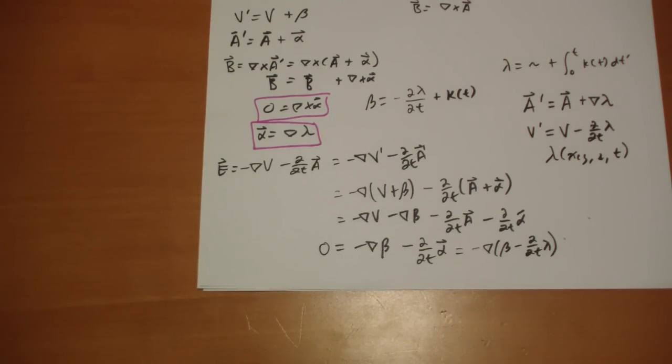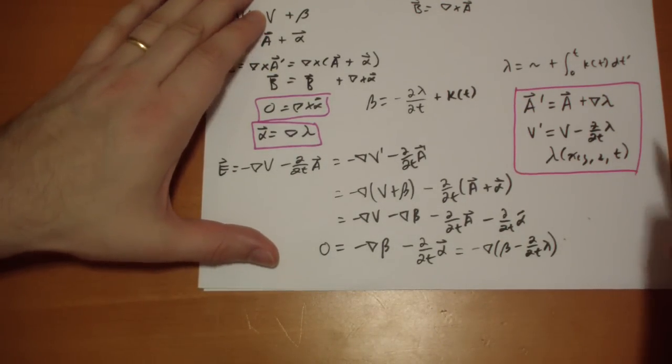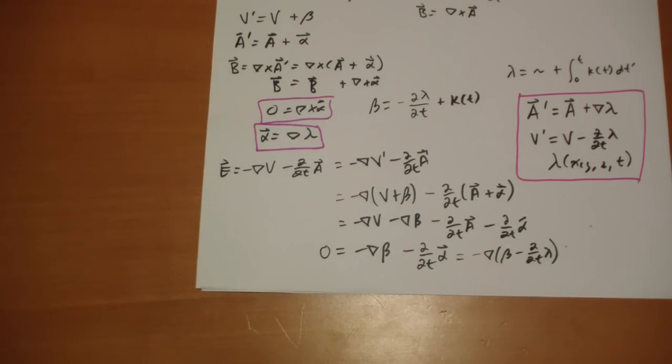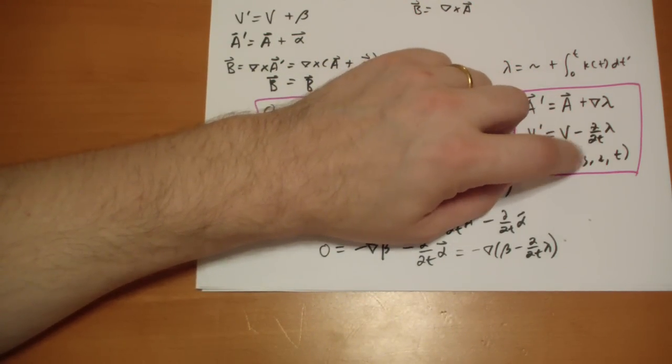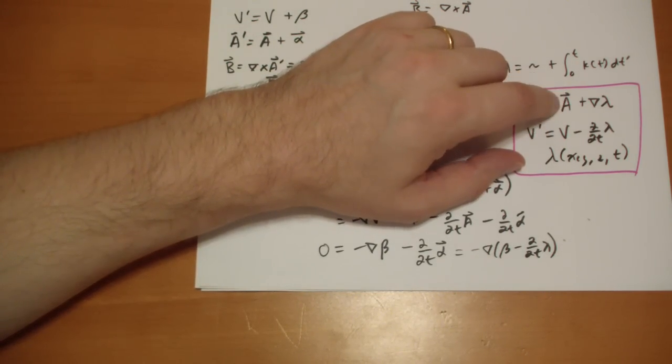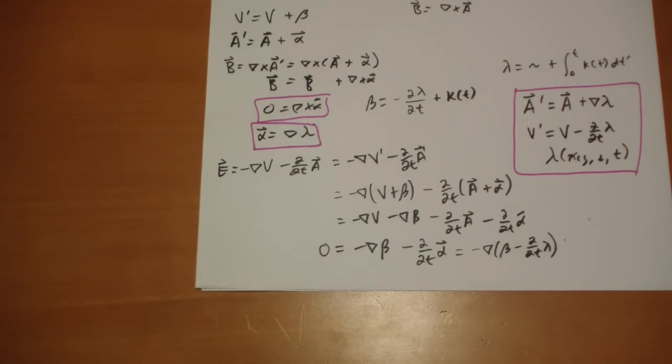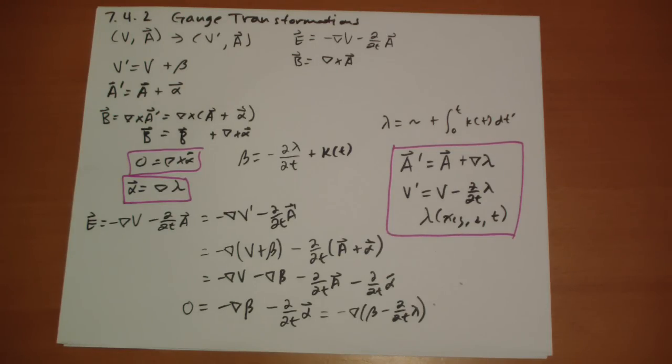So this is the bottom line, is we can choose any A or V vector that works. And we can convert back to any other A or V vector that works as long as we follow this simple rule that we take some scalar function, x, y, z, t, and we subtract the time derivative from our V and we add the gradient to our A. And then we'll always get the same E and B vectors no matter what lambda we choose.